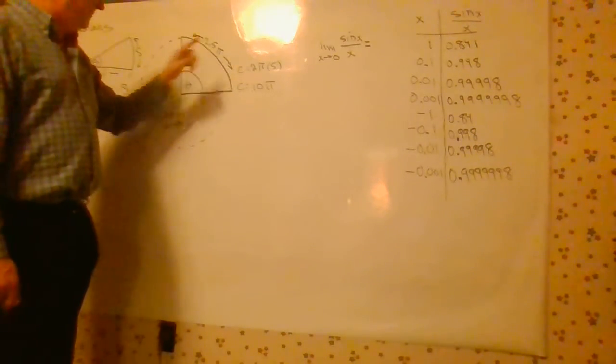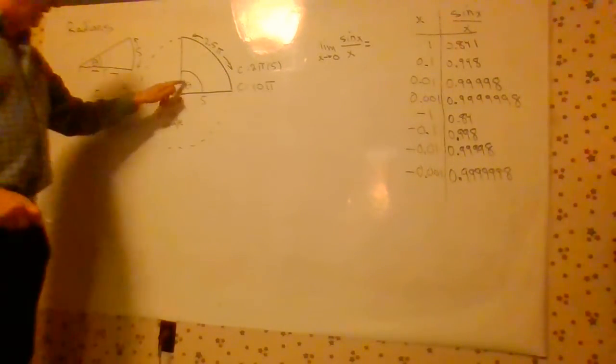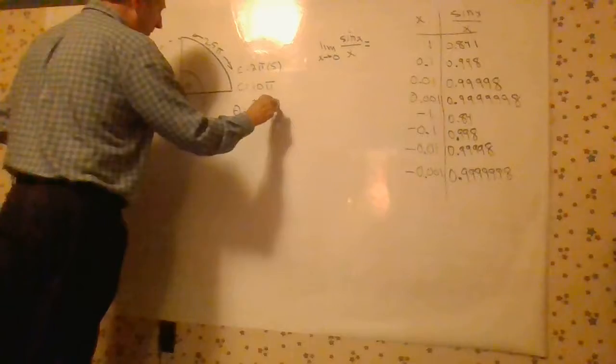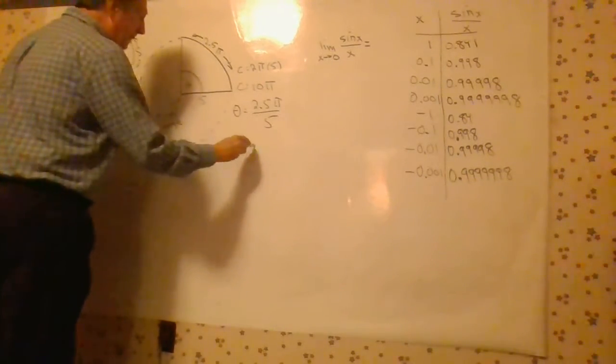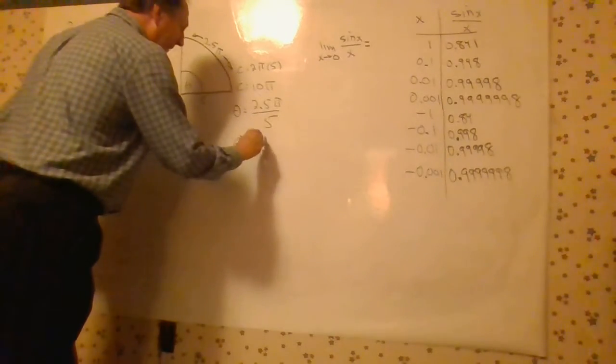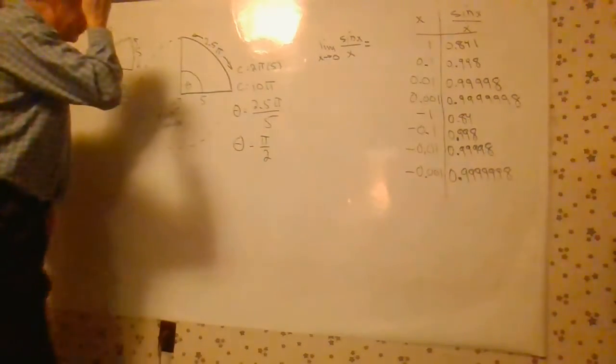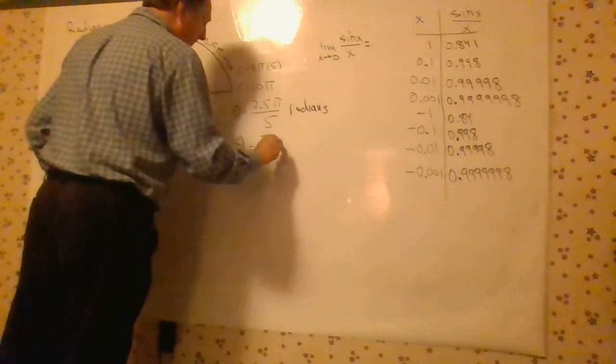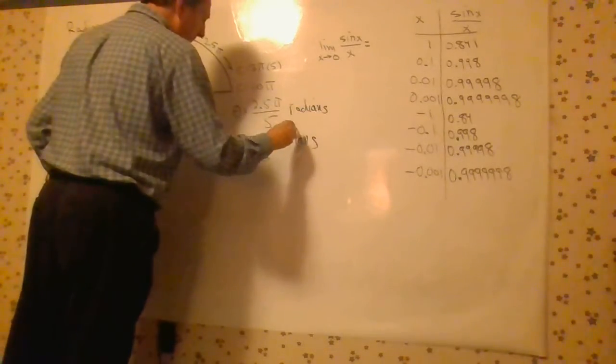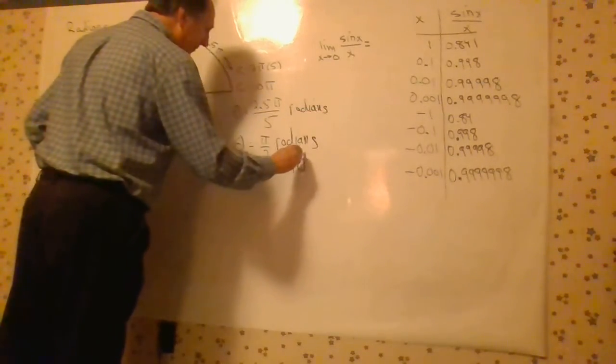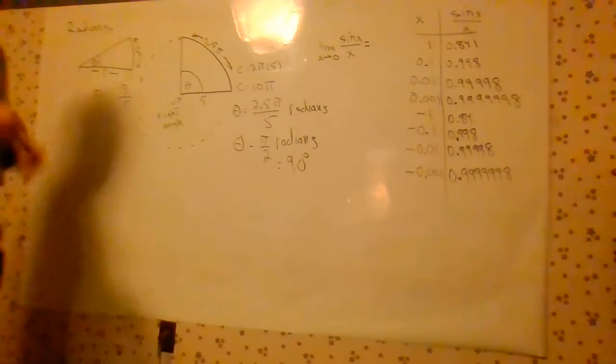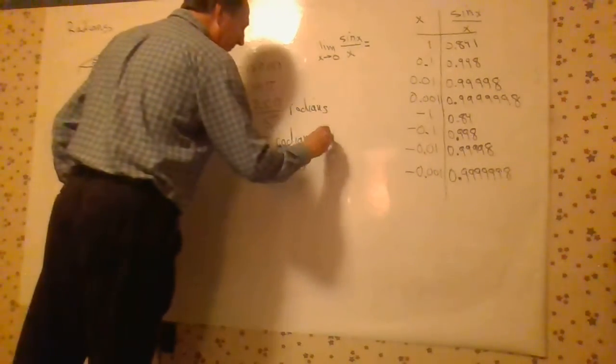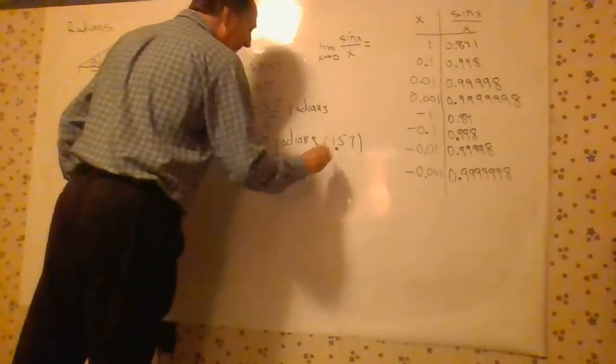A quarter of that is 2.5 pi, and so the angle here, theta, is 2.5 pi divided by 5, and 2 and a half over 5 is nothing more than a half. So we have pi over 2, and we can say radians. And of course we know that is 90 degrees. So a right angle is pi over 2 radians. 3.14 divided by 2 is 1.57, so if you want a decimal approximation, 1.57 radians.